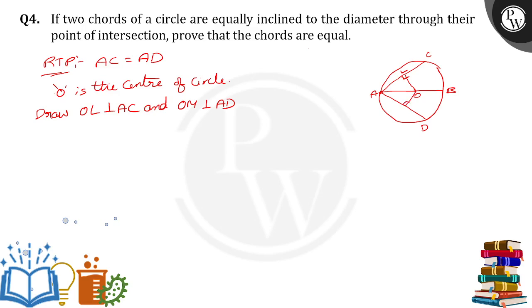So now triangle OLA and triangle OMA, these are the two triangles I have taken. What I am going to prove here? First one, angle OLA is equal to angle OMA because they both are equal to 90 degrees. Next, OA is equal to OA. It's a common side for both the triangles.